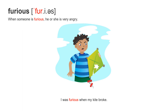Next word: furious. It has three syllables, accent on the first syllable — furious. When someone is furious, he or she is very angry. I was furious when my kite broke. Furious.